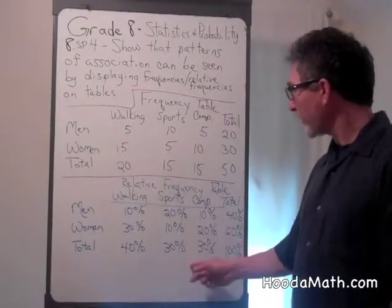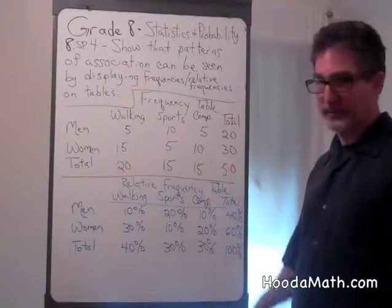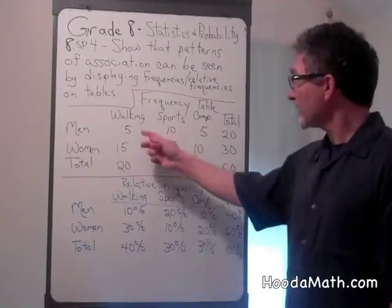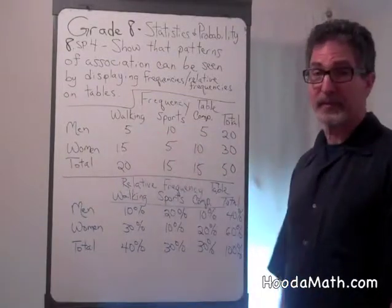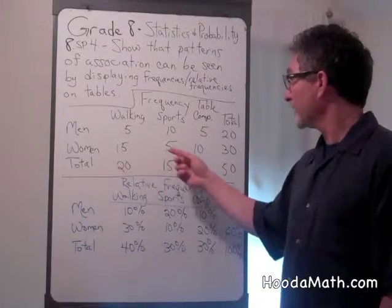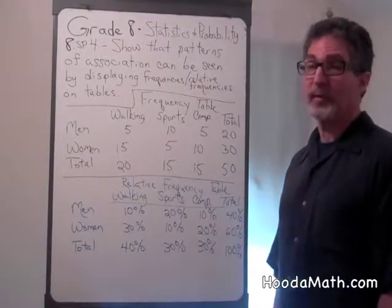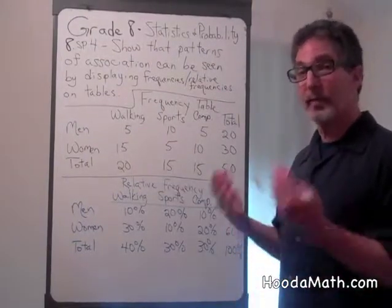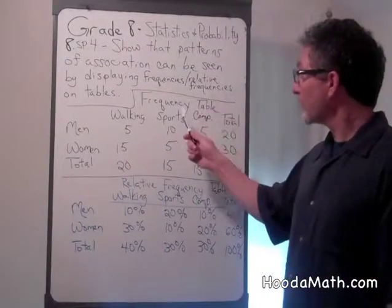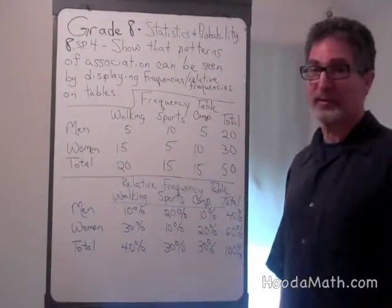Relative frequency is the amount out of the total. The frequency is just the raw numbers — for example, there were five men walking. I hope this gave you a better understanding of frequency tables and relative frequency tables.